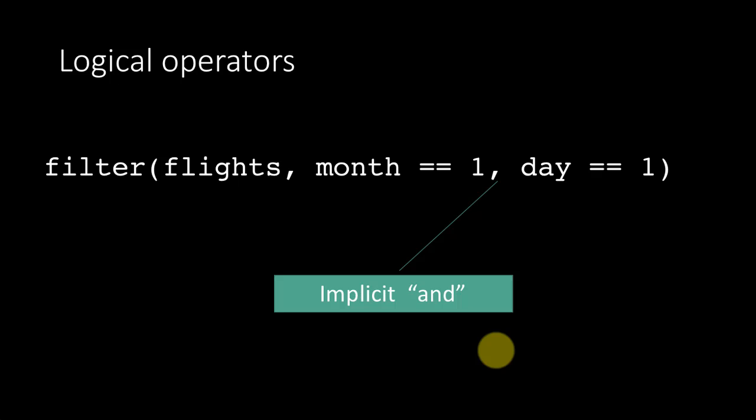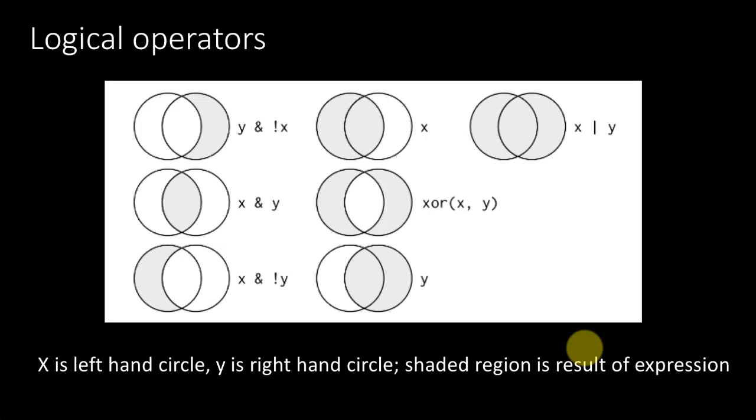Or if you want or, you can put the or operator as we have seen before. The and operator is the ampersand. The or operator is the pipe, the vertical bar.